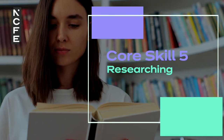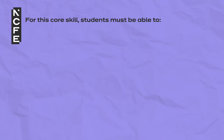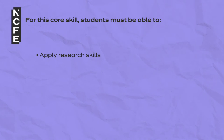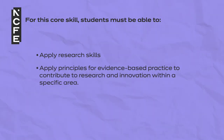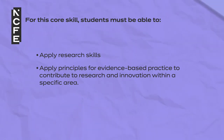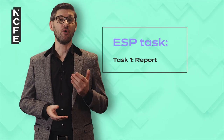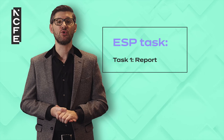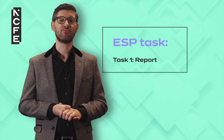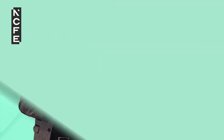Core skill 5 – Researching. Students must be able to apply research skills and apply principles for evidence-based practice to contribute to research and innovation within a specific area. An example of an employer set project task where this core skill is assessed is the report. The following types of activities are suggested to prepare students for the employer set project.